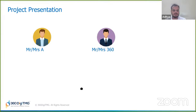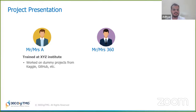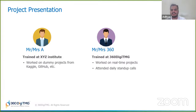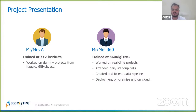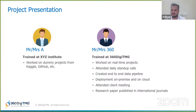We have two people competing for a job — Mr. A and Mr. 360. Mr. A is trained at XYZ Institute and has worked on dummy projects from Kaggle, GitHub, etc. Mr. 360, on the other hand, has worked on real-time projects. He has attended daily stand-up calls, worked on end-to-end data pipelines, done deployment for on-premise and cloud sources, attended various client meetings, and has research papers published in international journals. You can see the difference between the two and can take a guess as to who will get selected and whose resume will get shortlisted.